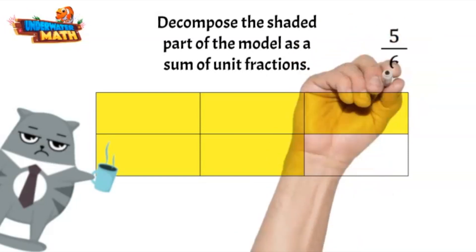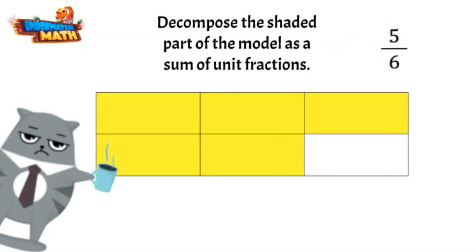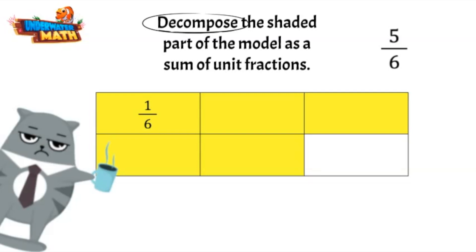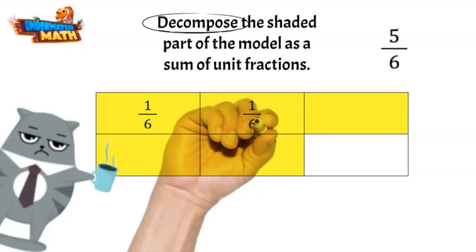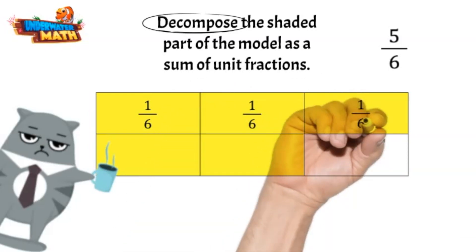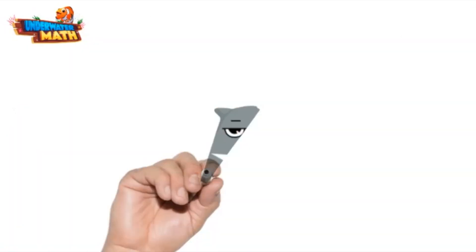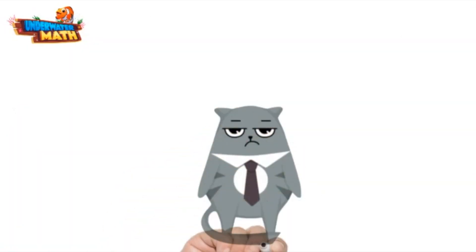Now let's take it apart. What fraction represents just one of these yellow pieces? One-sixth — it is one shaded out of six. Each of these parts is one-sixth. Grumpy kitty, you are really good at decomposing fractions! Only a little — but don't tell anyone.